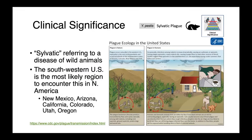Plague is an issue in wild animals as well. Sylvatic plague is really how plague maintains itself in the southwestern United States, and sylvatic refers to a disease of wild animals. Here you can see plague occurring in wild rodents — squirrels, prairie dogs, and wood rats. We have transmission of the organism between individuals as well as through vectors, particularly fleas. Periodically, we get spillover either into humans or into one of our domestic species.